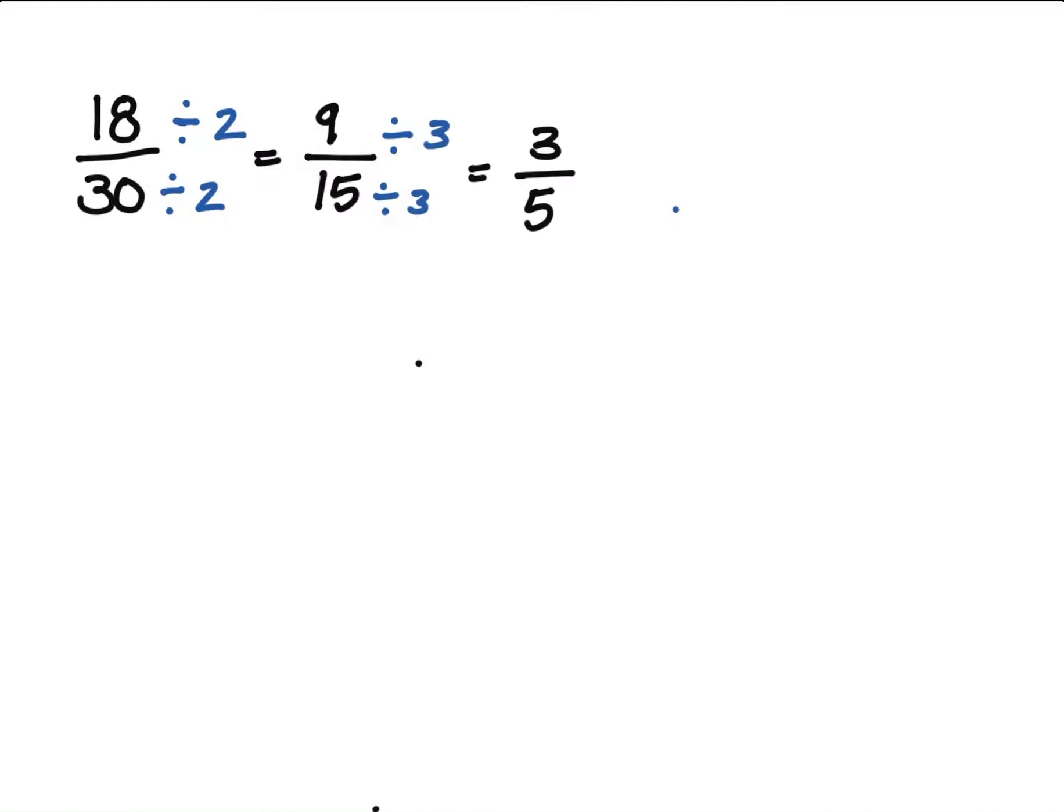So now we look at it and we say, okay, do 3 and 5 have anything in common? No, they are both prime numbers. Prime numbers have only two factors: one and themselves. And 3/5 is how you will reduce this.